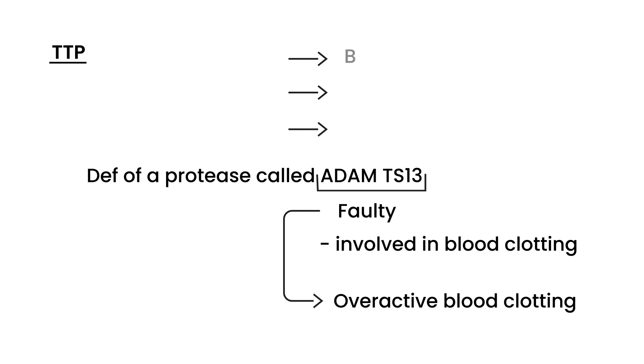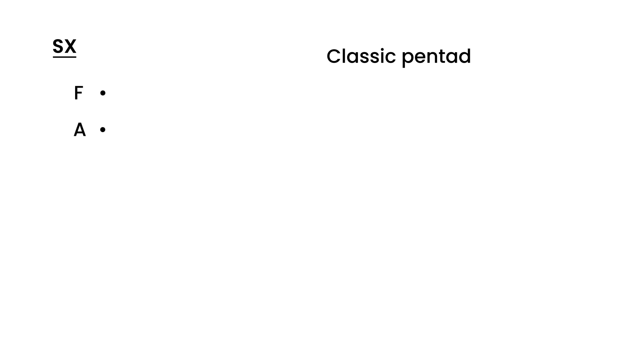TTP can affect not only the blood but also the kidneys and the central nervous system. The symptomatology is known as a classic pentad — meaning five things happen — and there's a nice mnemonic: FAT RN. The F is for fever, the A is for anemia, and in particular it's a hemolytic anemia.